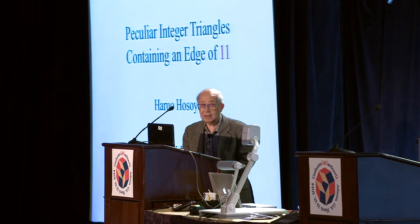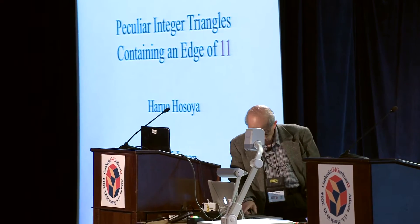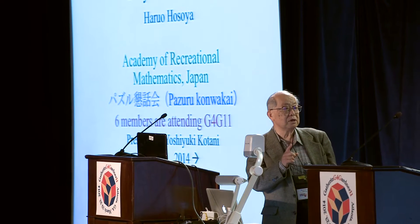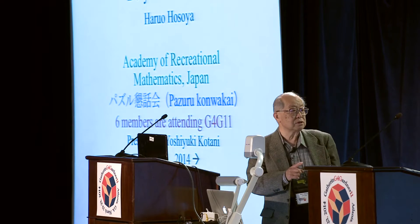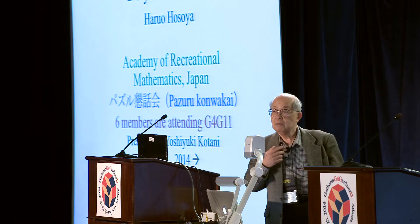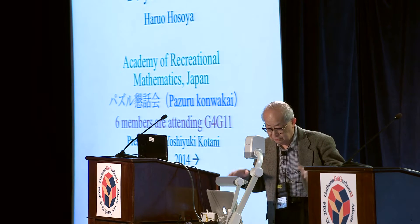My name is Hosoya from ARM Japan. I'm now president, but the title is like this, and I think you don't know me much. ARM Japan is Academy of Recreational Mathematics Japan, in Japanese 'puzzle konwakai.' Up to the end of this March I'll be president, but from April 1st, Yoshiki Kotani will be the president. Almost six members of ARM Japan are attending here.